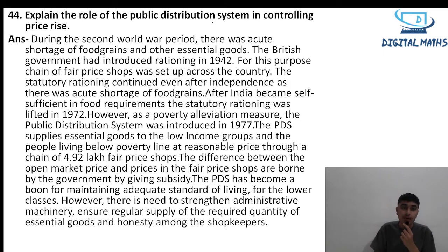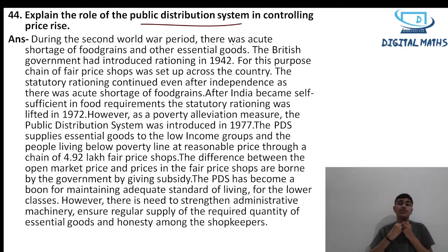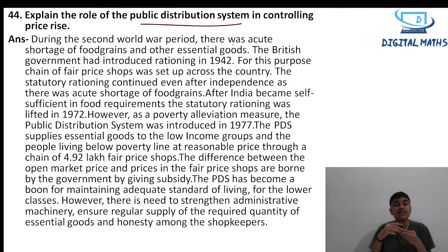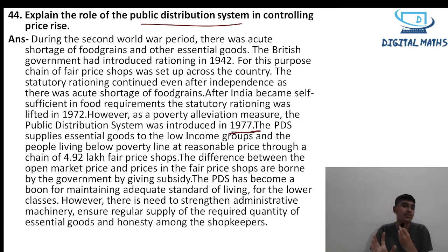Question 44: Explain the role of the Public Distribution System in controlling price rise. During World War II there was a shortage of essential goods. The British government introduced fair price shops in 1942. The Public Distribution System was formally introduced in 1977 as a poverty alleviation measure. There were 4.92 lakh fair price shops established under the PDS to distribute essential goods at controlled prices.